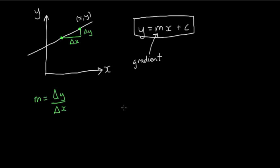So that's the gradient. And the c, well, the c is what we call the y-intercept. So where on the y-axis does my straight line cross? So here's my straight line. This is the point where it crosses the y-axis. This is my point c.